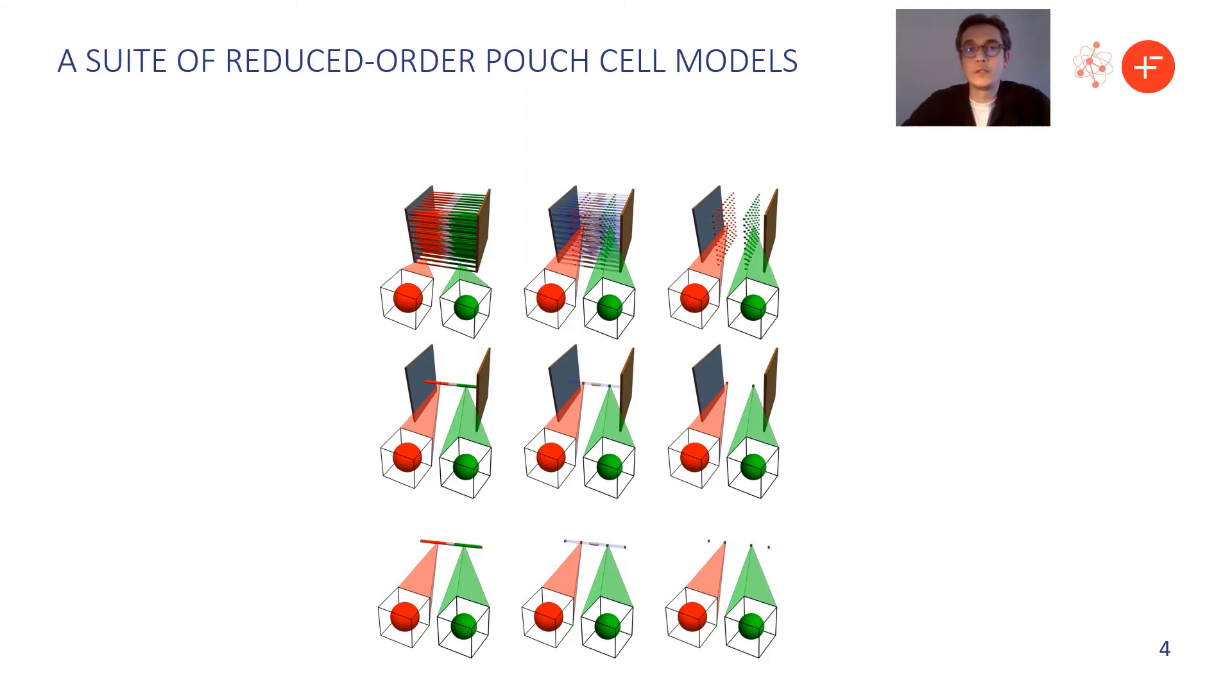So it actually turns out we can develop a whole suite of reduced order models suitable for pouch cells. Our starting point for this analysis is this image in the top left. Here instead of solving a full 3D model of the pouch cell, we solve a whole collection of 1D models for the through-cell behavior represented here by the rods, which are all coupled together via 2D problems in the current collectors. We can make this simplification because pouch cells are typically much thinner than they are in the remaining two dimensions, so they have a high aspect ratio.